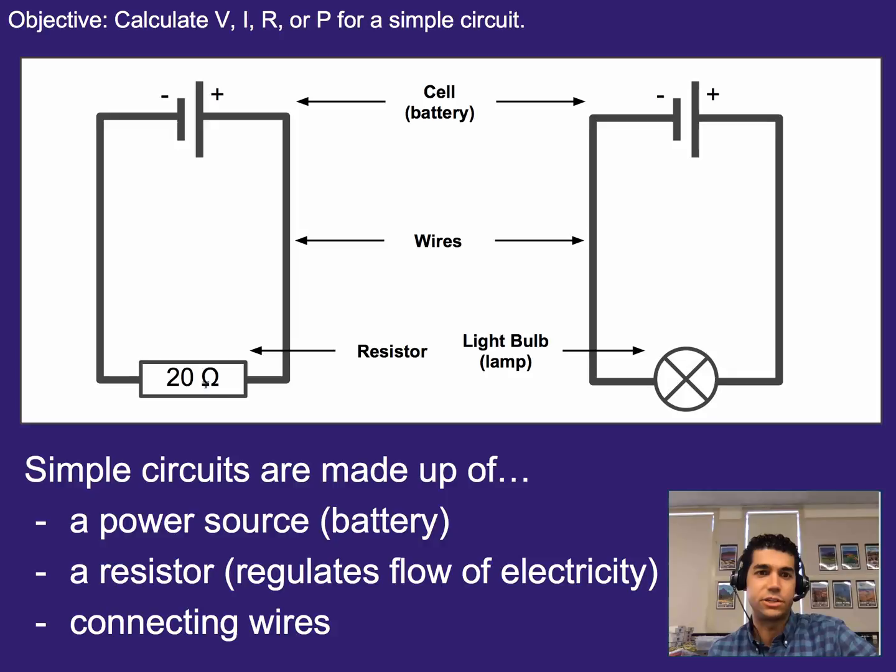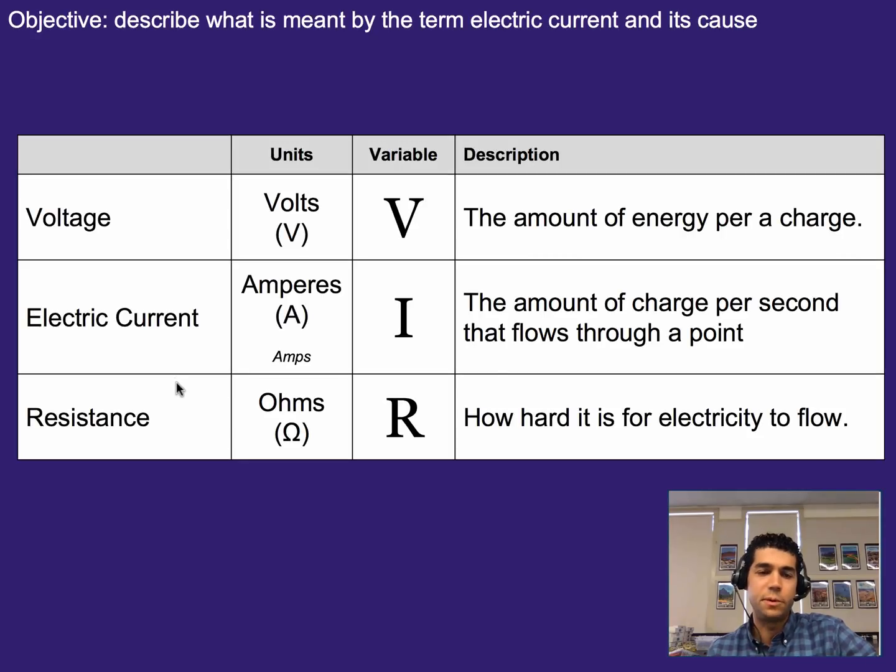But we can also just attach a resistor, like some actual physical thing, that restricts the flow of electricity through our circuit here. Now remember that voltage is the amount of energy per charge, electric current is how fast the charge is flowing through our circuit, and resistance is how hard it is for electricity to flow, and these three things are related.